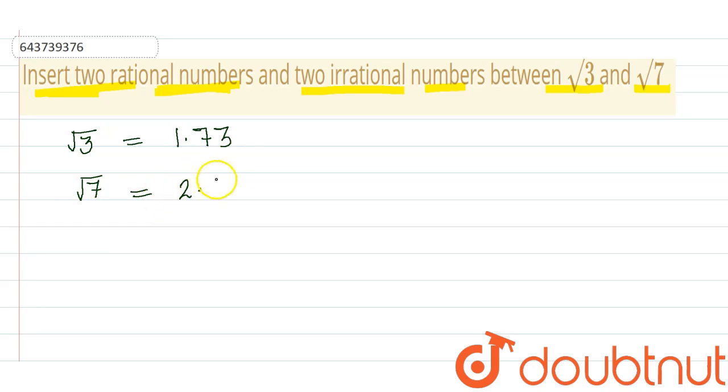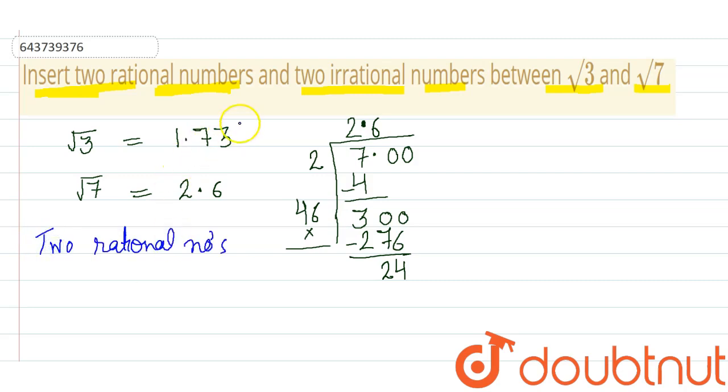So as an idea approximately it has two points. So to write two rational numbers, write any two numbers in between 1.73 and 2.6. So in decimal form it's easy to find any number between this.